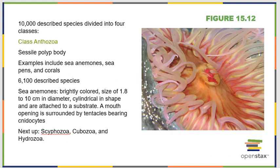We split the cnidarian phylum into four classes. Class Anthozoa is one of the most recognizable — they have a sessile polyp body form. This includes your sea anemones, sea pens, and coral. If you've seen Finding Nemo, Nemo lived in an anemone — a member of Class Anthozoa. There are about 6,100 described species. They tend to be very brightly colored, cylindrical in shape, and attached to substrate on one end, with a singular opening to their gastrovascular cavity and tentacles that pull food in and sting neighbors.